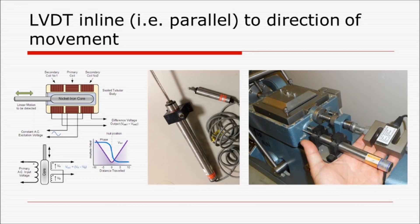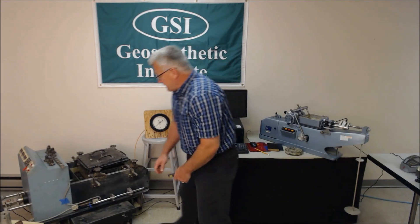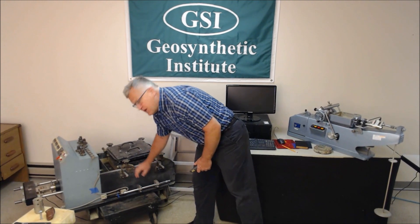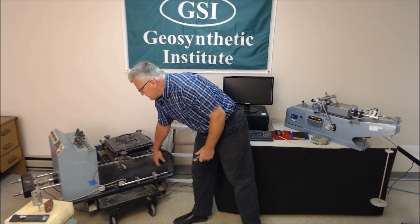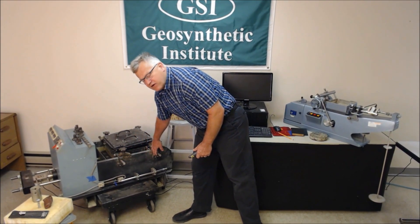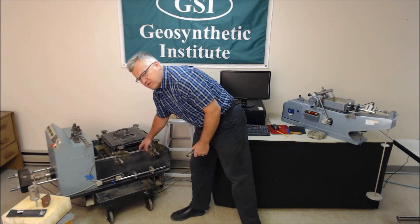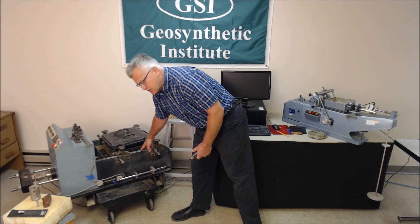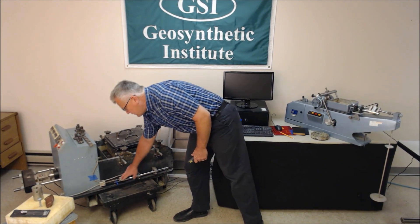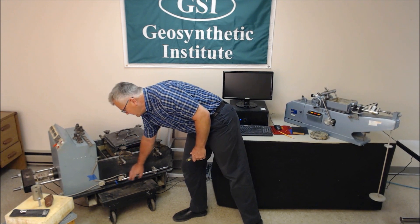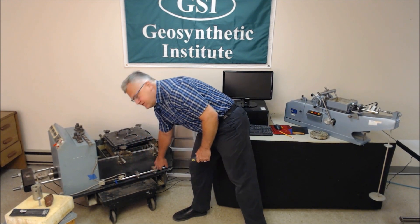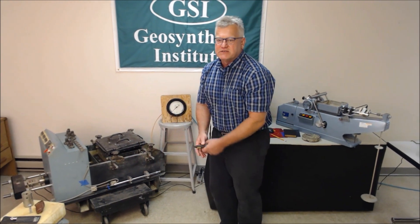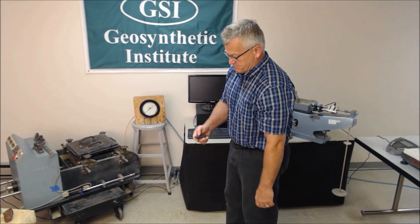As far as displacement, this is most often done with an LVDT. On this device we have about 3 to 4 inches of movement over this 12-inch box—or 300-millimeter box—about 100 millimeters of movement, and this LVDT records that and puts it right into the computer.